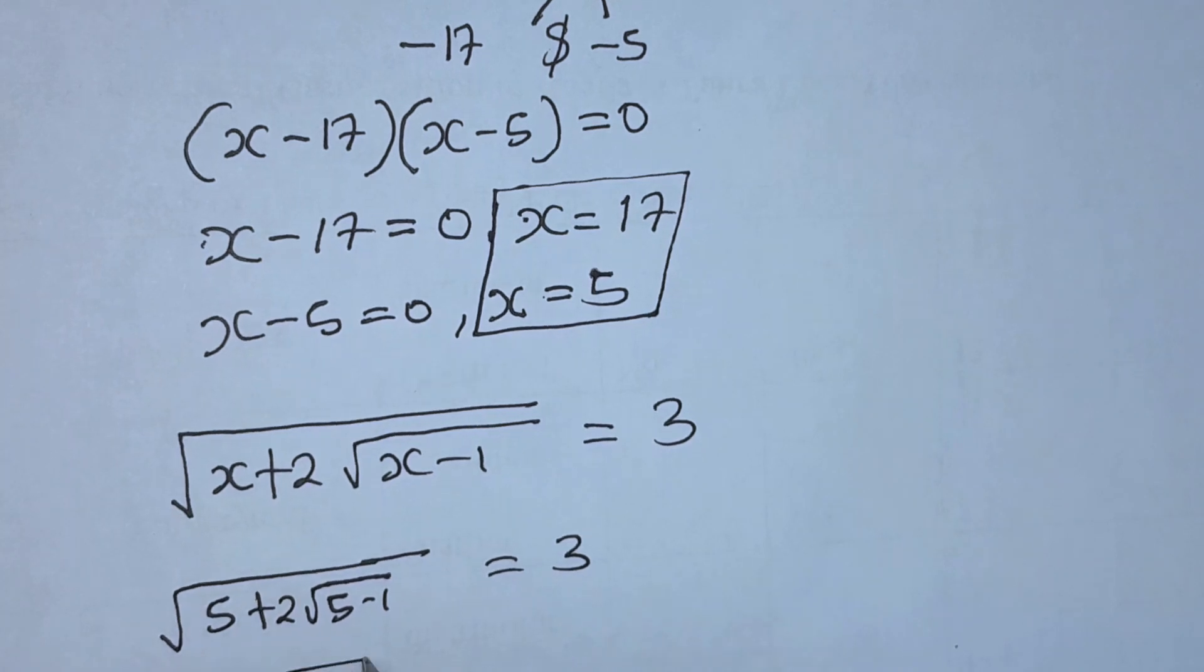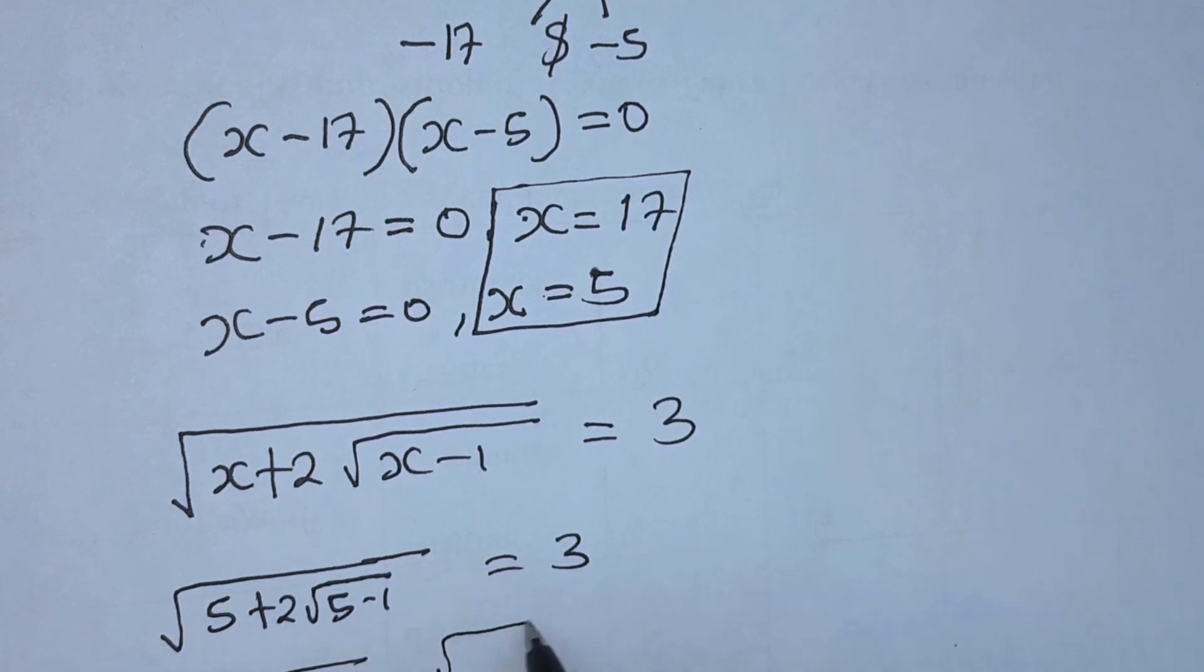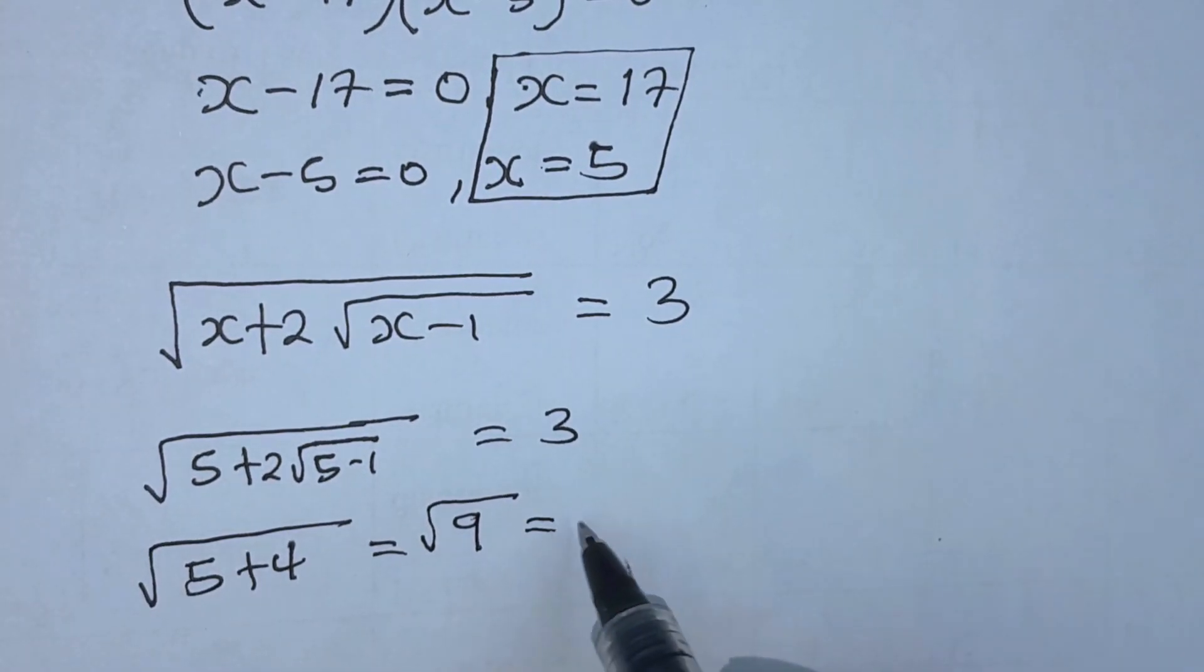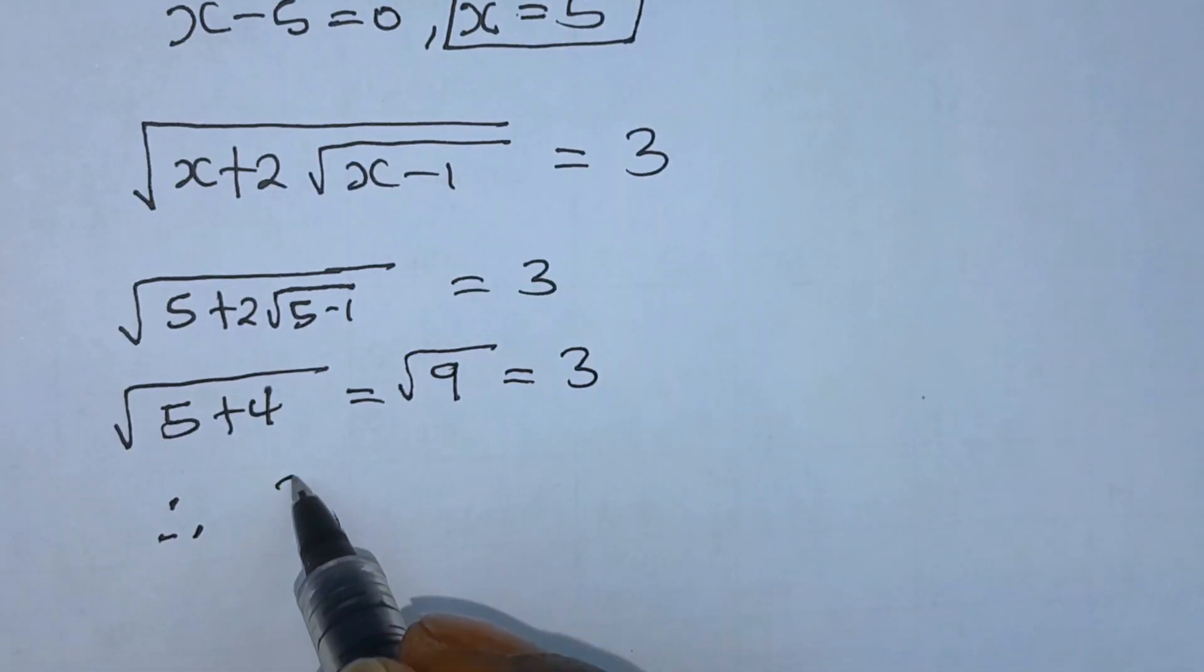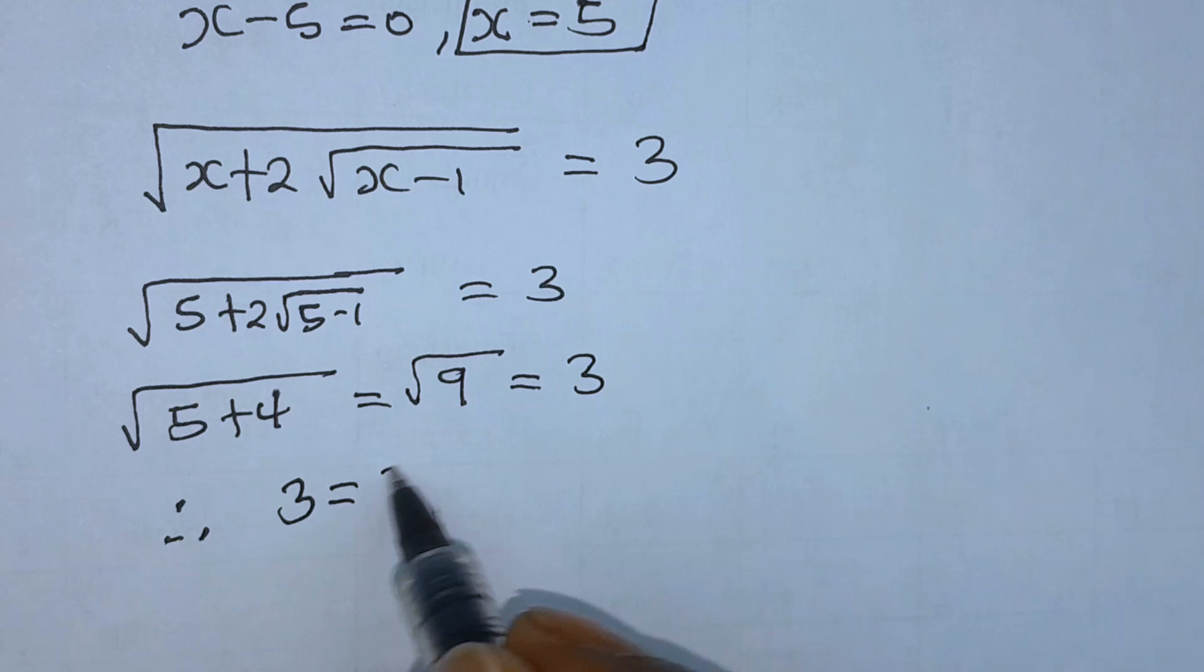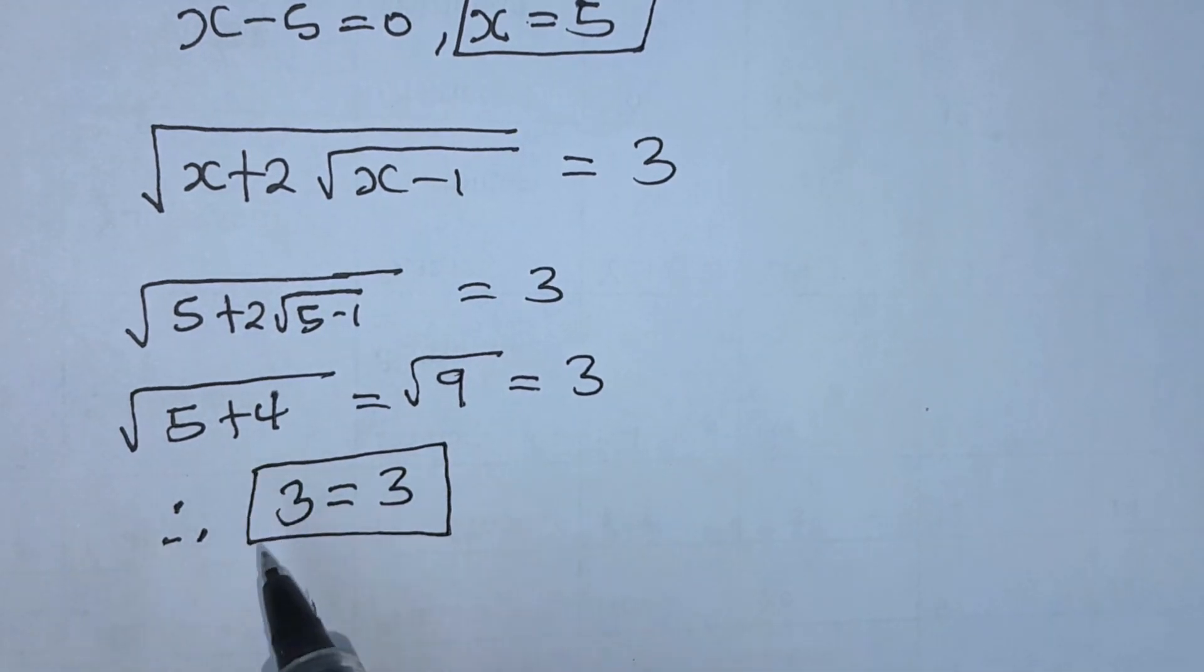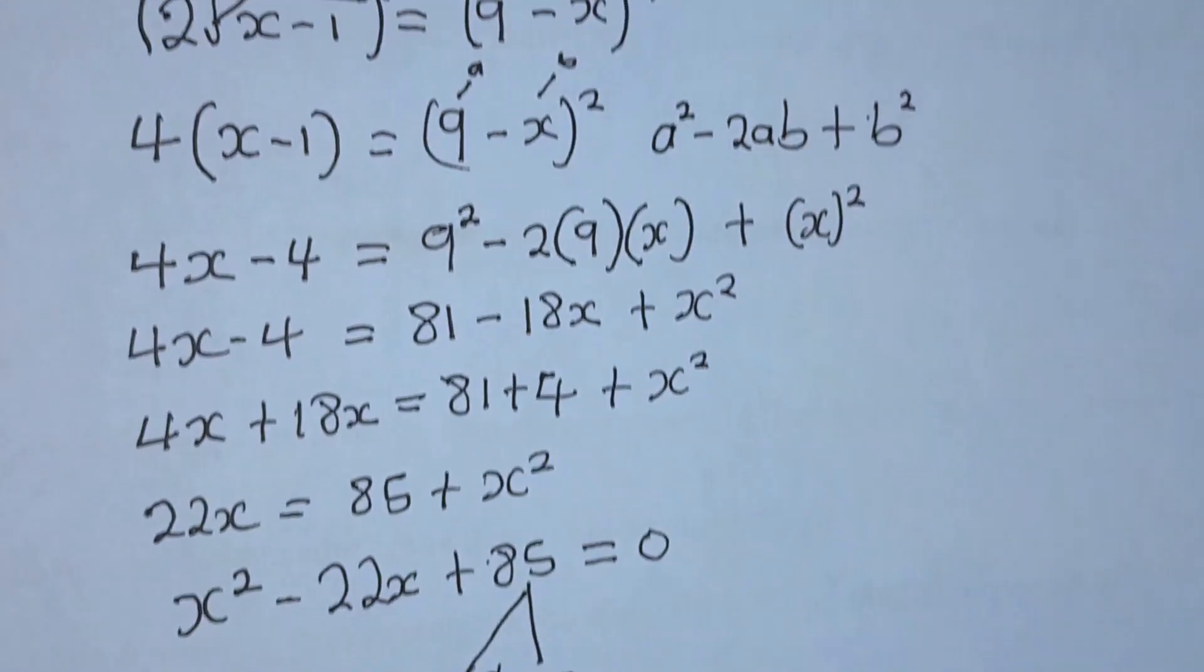Therefore, 5 plus 4 equals square root of 9. And square root of 9 is nothing but 3. Therefore, 3 equals 3, which is correct. Thank you for watching. Don't forget to subscribe to my channel for more exciting videos.